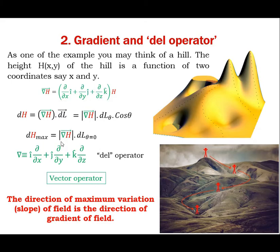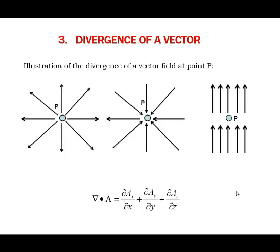The del operator behaves like a vector in terms of scalar and vector products with other vectors. When del operator is operated on any vector field A via dot product, it gives the divergence of that vector. The property of divergence is like its name: the divergence of any vector shows how much the field is diverging from any point, or how much field is converging to that point. If the divergence of the vector field is positive, it shows that the vector is diverging at that point. If the divergence of A is negative, then that point becomes a sink for that vector.